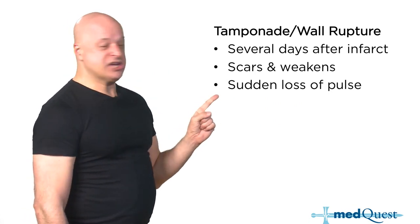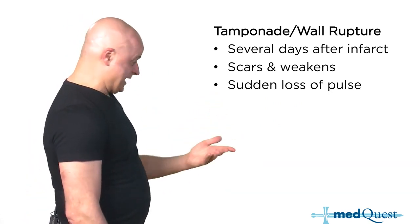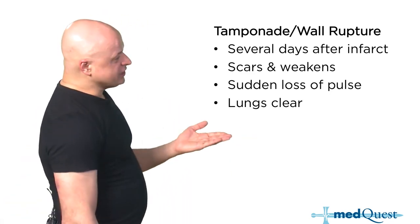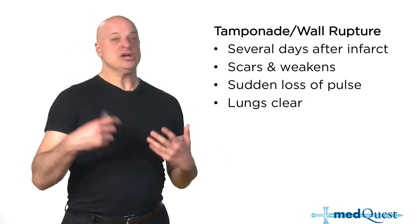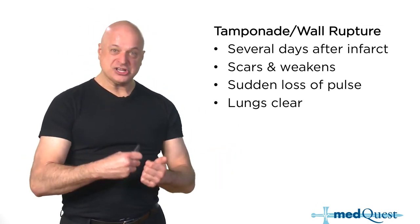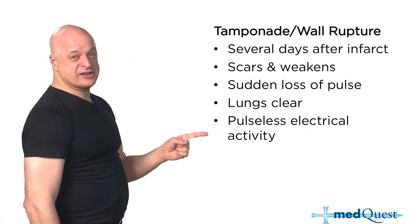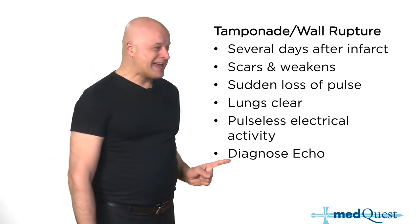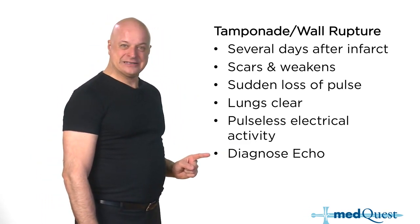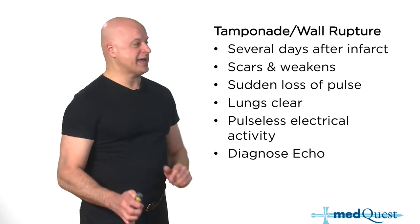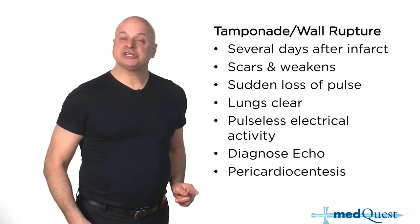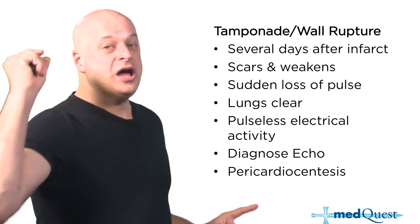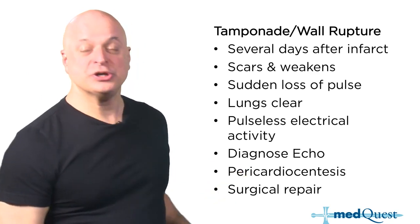With wall rupture, you'll have a normal EKG but no pulse. The lungs are clear because with tamponade, the right ventricle is compressed and can't fill the lungs. The most accurate test is an echo or cath — you'll see compression of all chambers in diastole. Emergent pericardiocentesis is performed on the way to the operating room.